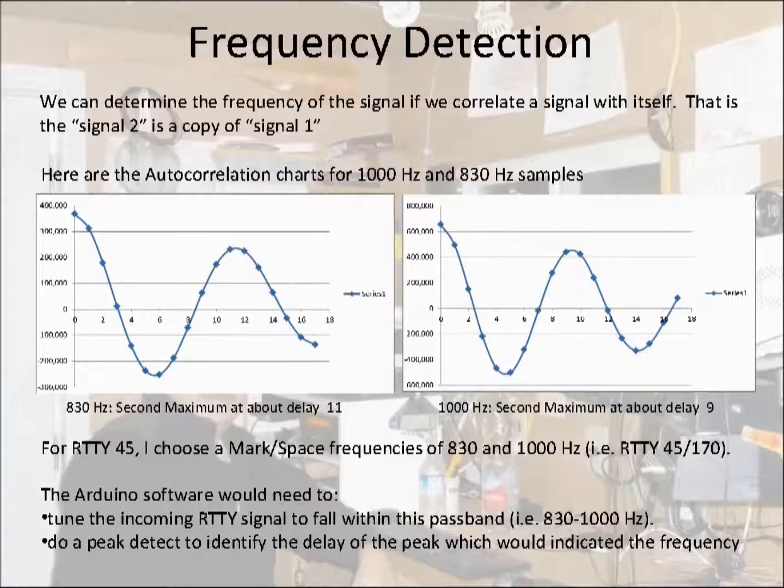I chose these frequencies because I have an analog front end before the Arduino's ADC that implements an active low pass filter with a cutoff frequency around 900 hertz. That defines my passband. So with the Arduino receiver, I need to tune the RTTY signal into the passband for processing. Then I will do a peak detect to identify the delay and hence if a mark or space frequency was present. Then I frame the received bits into a character. I'm going to post a separate video describing how to frame PSK and RTTY characters.